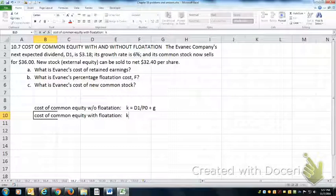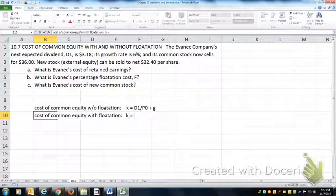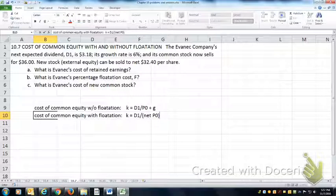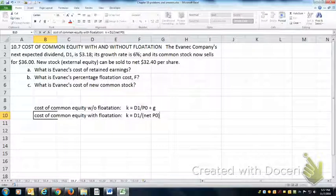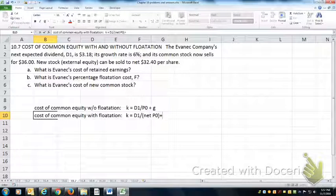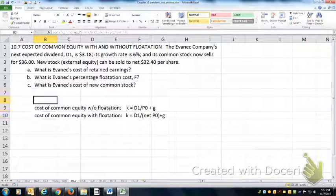The cost of common equity with flotation simply adjusts for the cost of the flotation. So that'd be equal to D1 over net P0 - that'd be the price of the stock adjusted to take out the commission you'd have to pay to the investment banker - plus G.